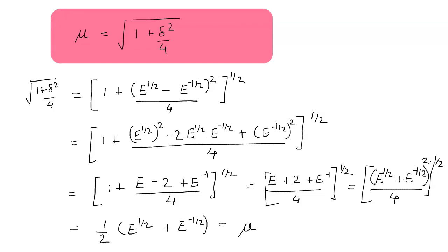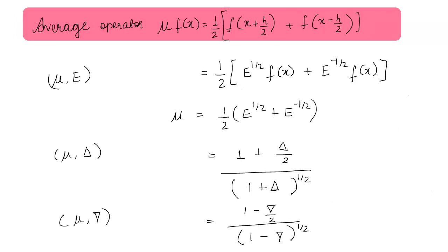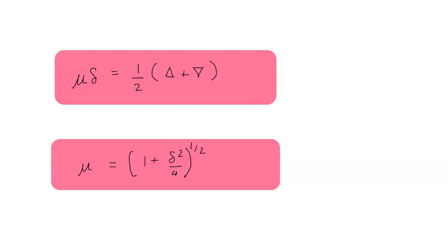So, before we finish, let us summarize what we have studied in this video. We studied the relationship between different types of operators: the central difference operator, the average operator mu, and their relations with the shift, forward, and backward difference operators. The two most important results are μδ = (1/2)(Δ + ∇) and μ = √(1 + δ²/4). Thank you for watching and see you in the next class.